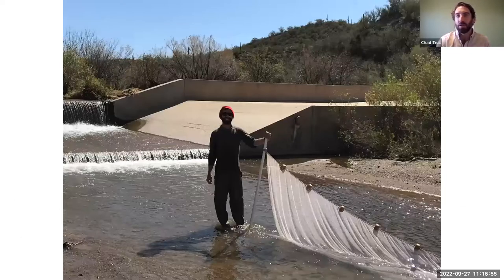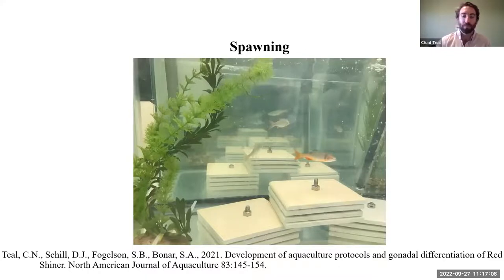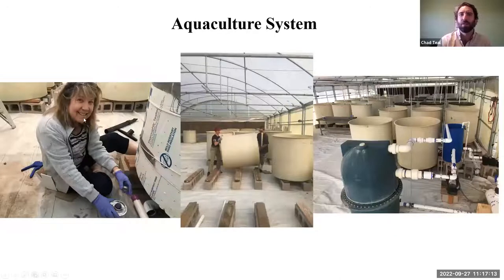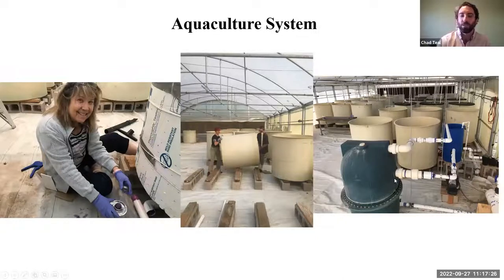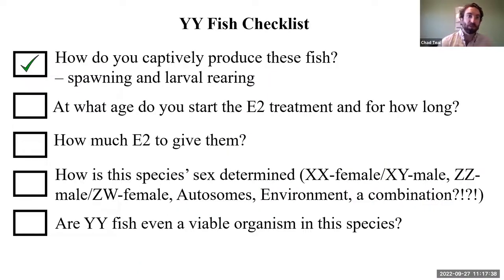We started catching Red Shiner here in the Southwest and developed aquaculture protocols, tracking their development to figure out the best timing for estradiol treatments. This was a family effort — right around Thanksgiving we built a large aquaculture system and greenhouse at the university. No one was spared: my poor mother was gluing PVC. We were producing large numbers of these fish year-round. Red Shiner are a hardy invasive species and aren't particularly picky about water quality parameters or spawning conditions, so that was a pretty simple task to accomplish.